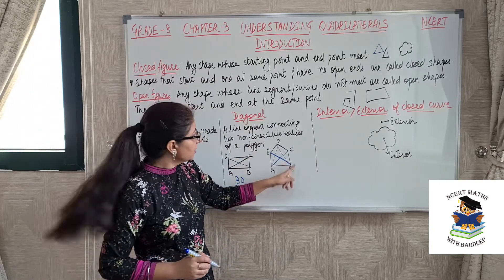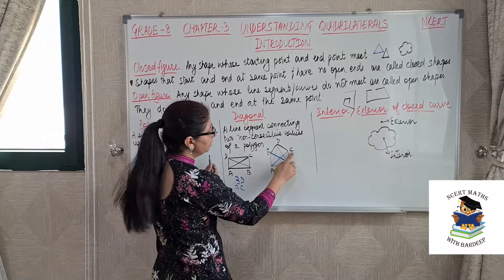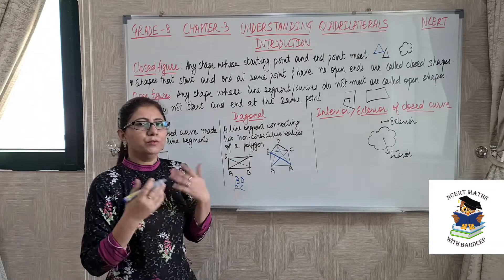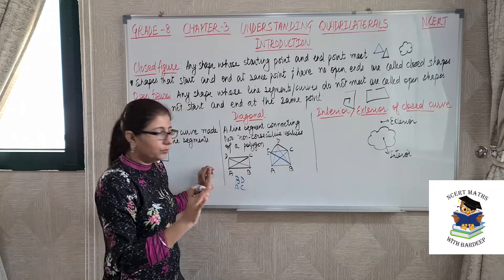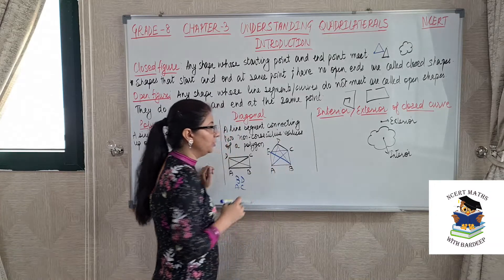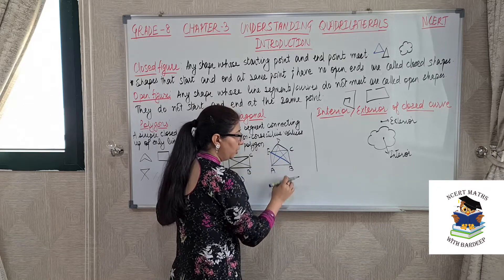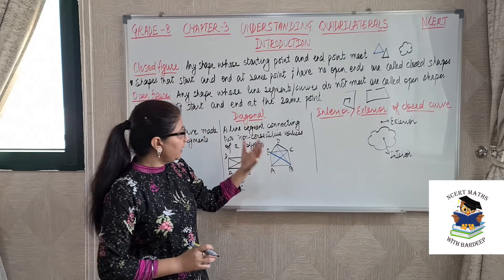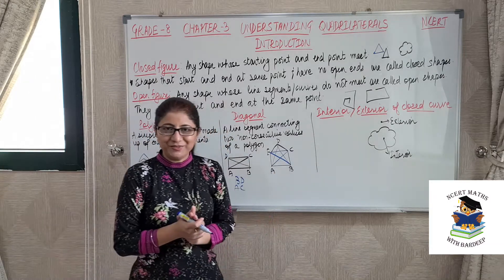For vertex B, B again cannot be joined with A and C, so B should be joined with D and E — giving B two diagonals. For vertex C, CD and CB are edges, so we join C with E, and C with A which is already joined. For vertex D, A and B are non-consecutive vertices but both connections are already drawn. For vertex E, C and B are non-consecutive vertices but already joined. So we can say that any polygon can have N number of diagonals depending upon the number of non-consecutive vertices.